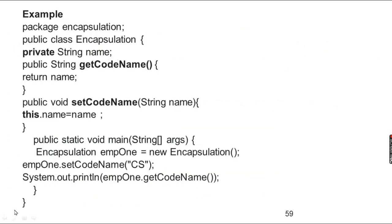For example, we have a class called Encapsulation. This is the encapsulation class. If you want to declare a new variable, you can declare it as private — for example, private String name. String name is an instance variable. This instance variable is private. A private value is retrieved by using the getter method, which is declared as public.